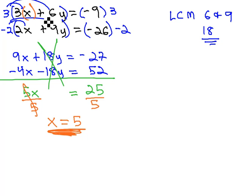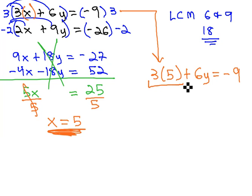We'll replace that x with 5, and find out what y is. That first equation is 3x or 3 times 5 plus 6y equals negative 9. 3 times 5 is 15 plus 6y equals negative 9.